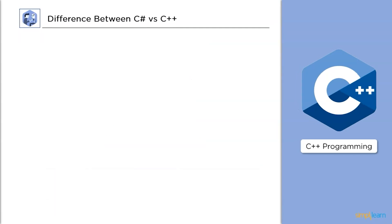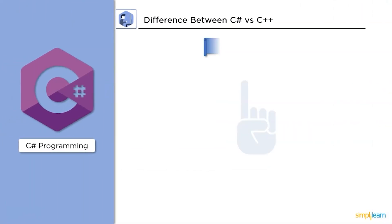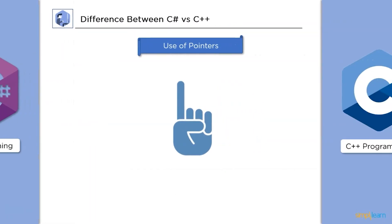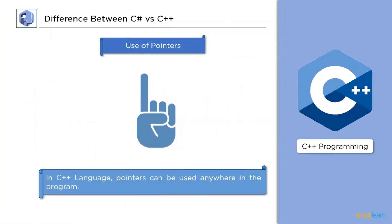Next up, pointer uses. In C Sharp, a pointer can be used in unsafe mode. By default, C Sharp does not support pointer arithmetic. However, we can construct an unsafe environment in which pointers can be accessed by using the unsafe keyword. On the contrary, pointers in C++ can be used anywhere in the program.